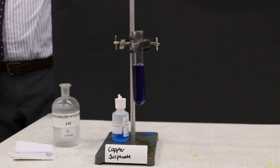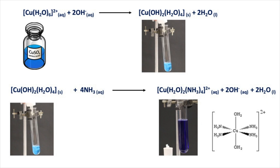Now let's look at some ionic equations to represent the reactions that have taken place. If we put some copper sulphate solution into a test tube, that contains Cu(H₂O)₆²⁺ ions. When we added sodium hydroxide solution, the following reaction takes place: Cu(H₂O)₆²⁺ + 2OH⁻ → Cu(OH)₂(H₂O)₄ (s) + 2H₂O. What we've done here is kicked out two of the water ligands surrounding the copper 2+ ion and replaced them with hydroxide ions as ligands.